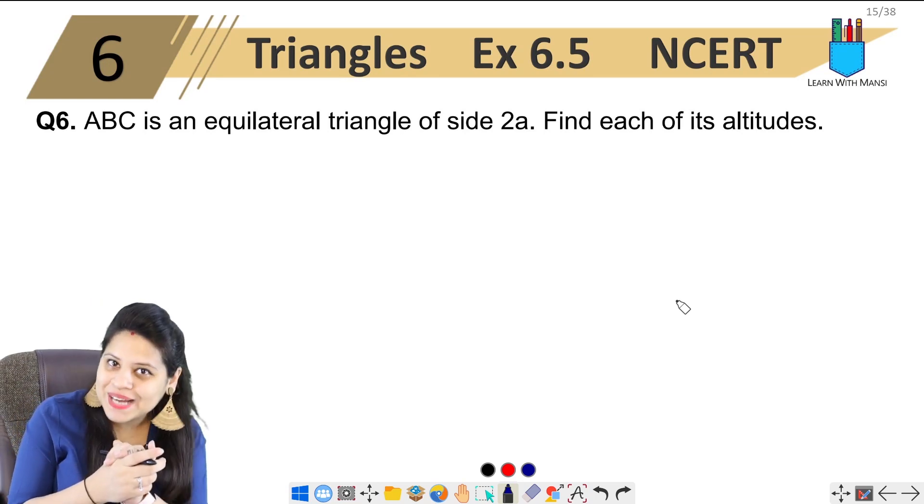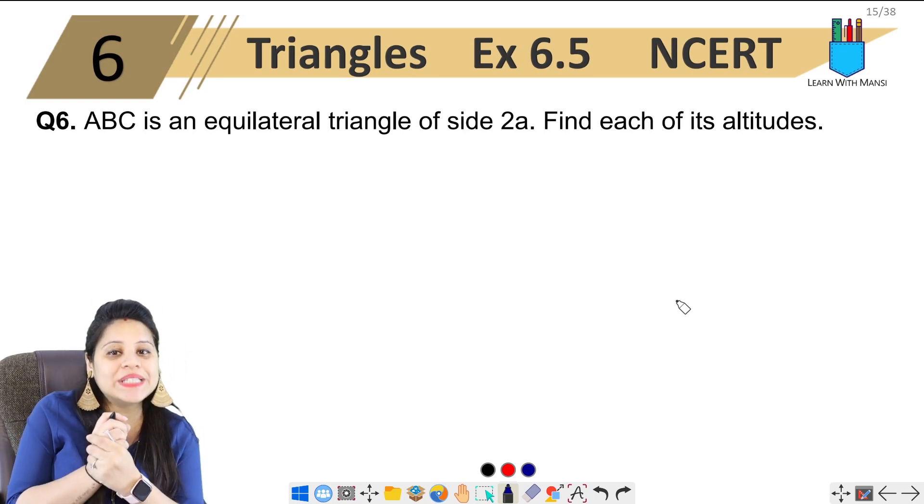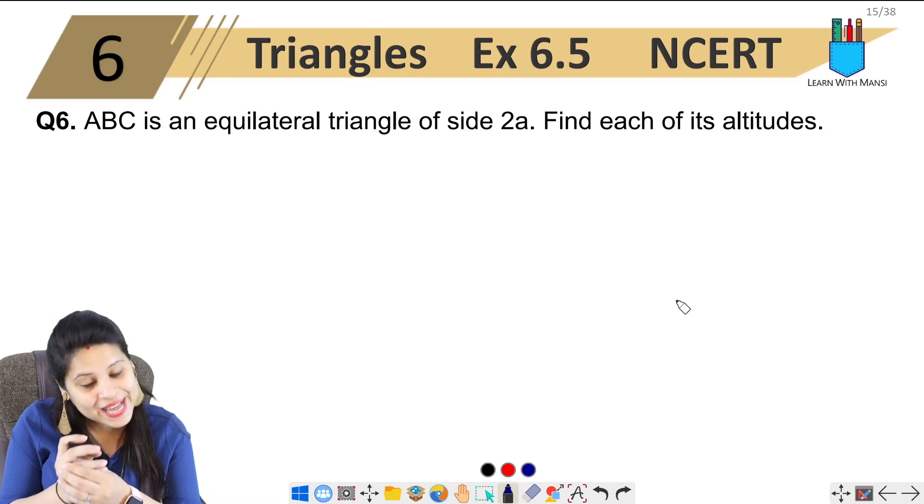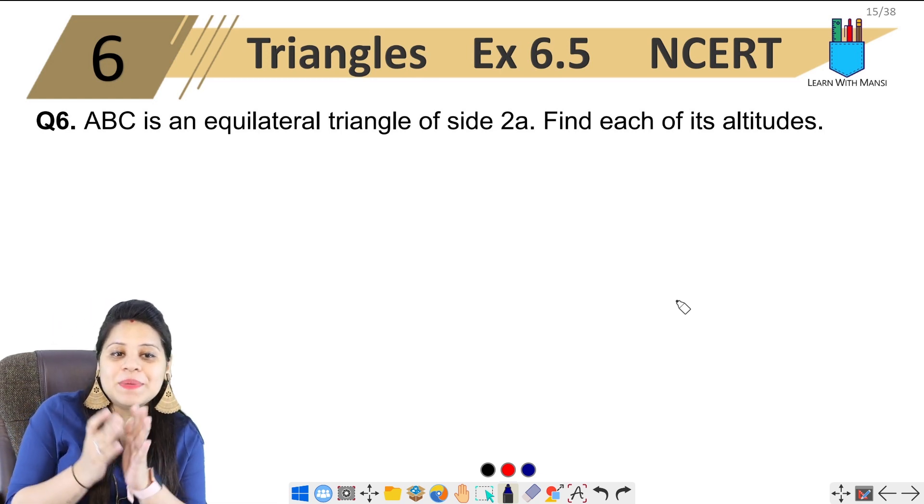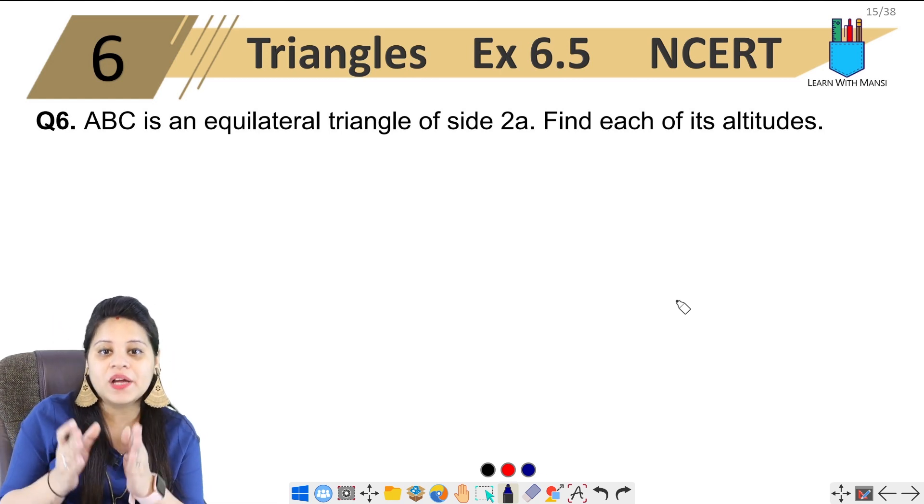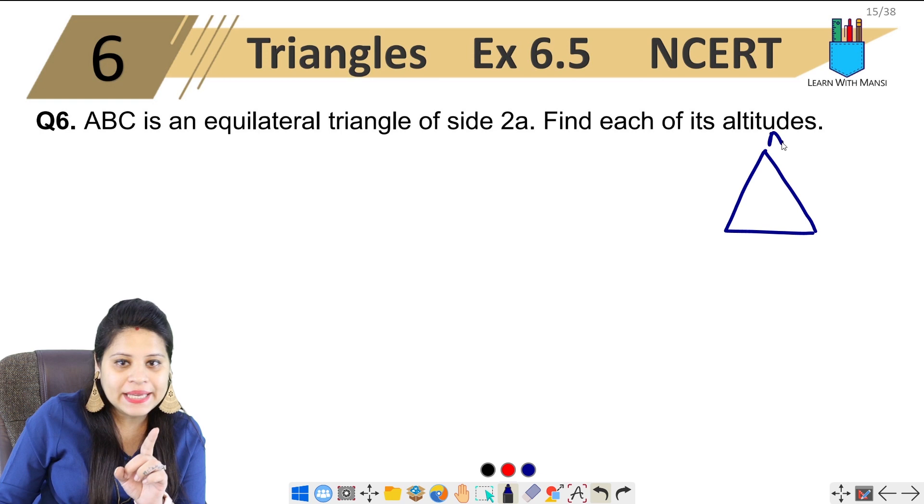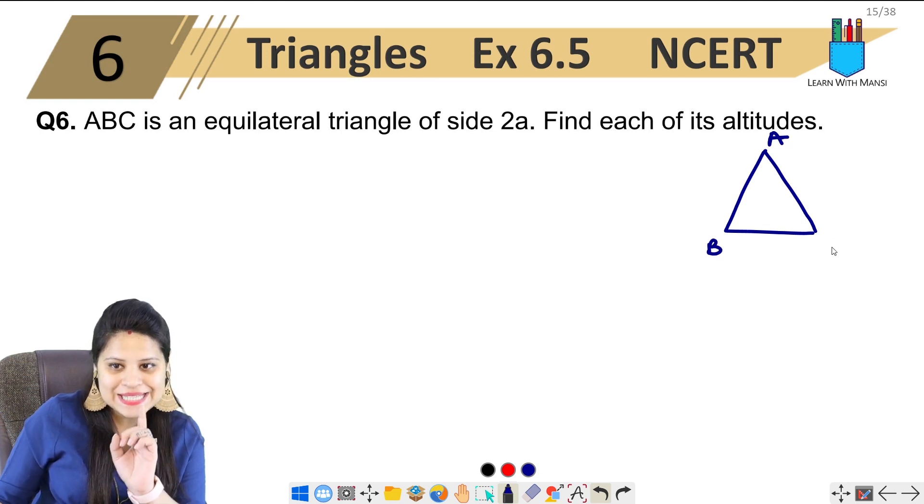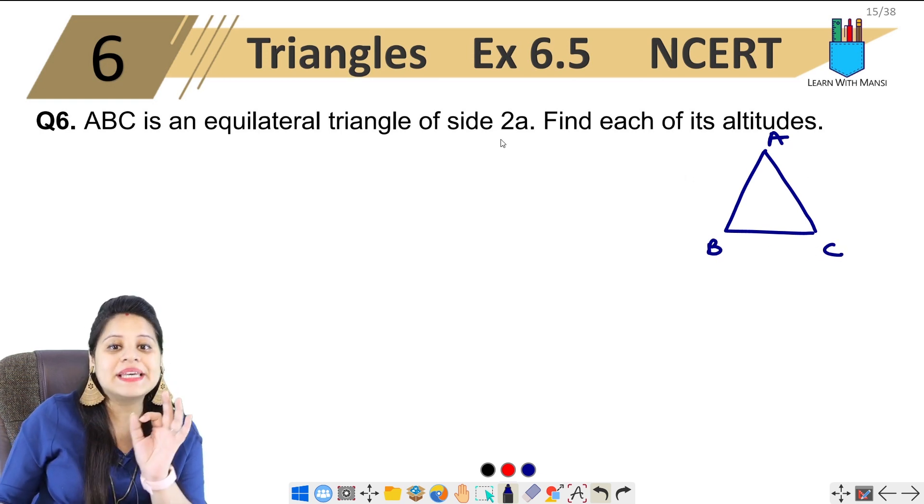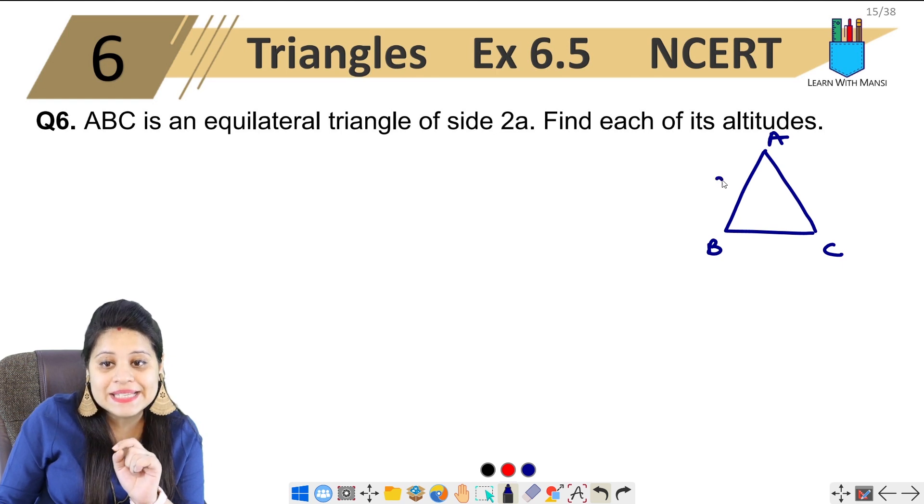Hello everyone, this is Mansi. Welcome back to the channel. Now we're going to start with the sixth question of exercise 6.5. The question says ABC is an equilateral triangle of side 2a. So we have made an equilateral triangle and we have said this is ABC. So this ABC is our equilateral triangle of size 2a, 2a, 2a because equilateral triangle has all sides equal.